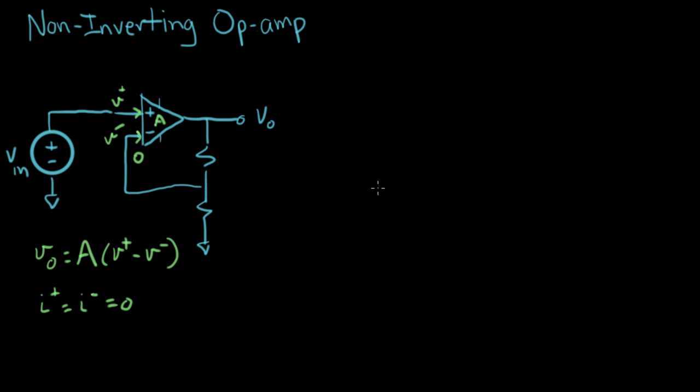So now what I want to do is describe what's going on inside this triangle symbol in more detail by building a circuit model. And the circuit model for an amplifier looks like this. We have V minus here, V plus here, so this is V in.